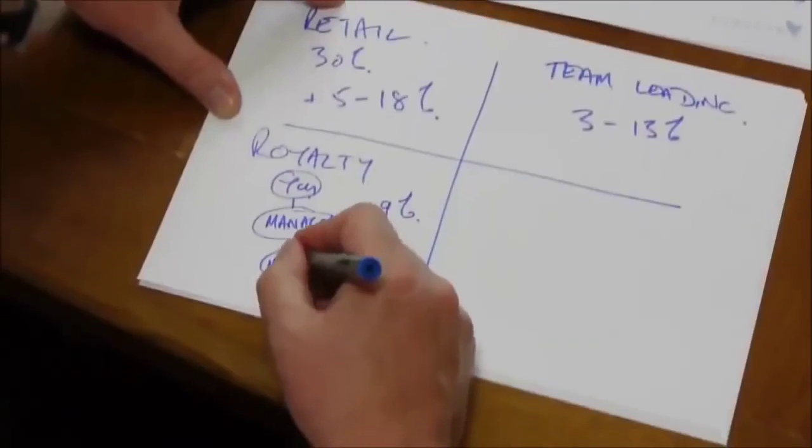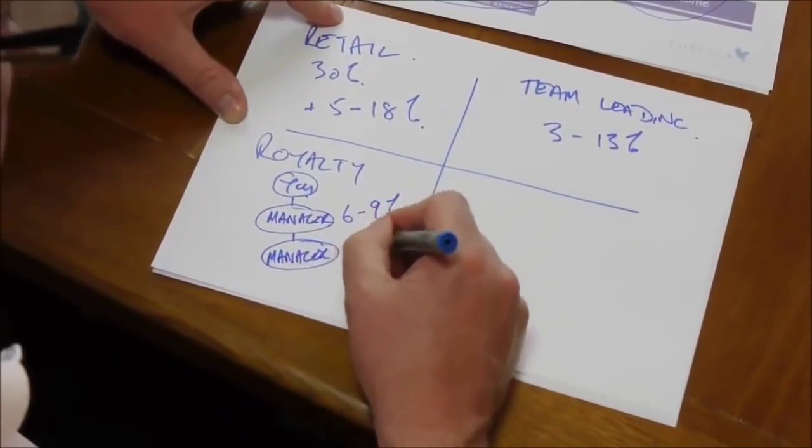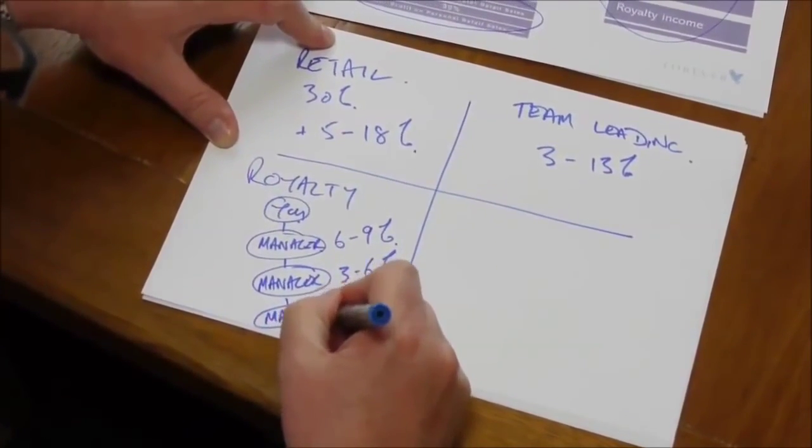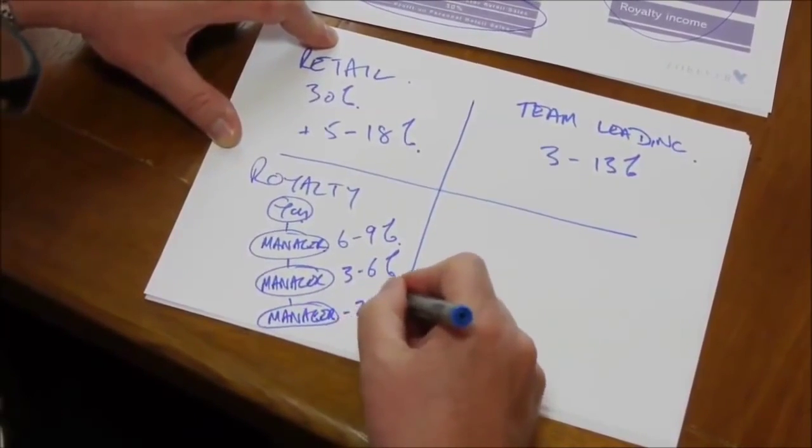For people you've personally sponsored — first generation managers — you receive 6 to 9%, starting at 6%. Second generation managers — where your manager sponsors somebody who reaches manager — you receive 3 to 6%. And when they sponsor somebody who reaches manager, that's a third generation manager to you, and you receive a royalty bonus of 2 to 5%.